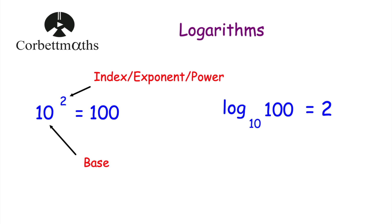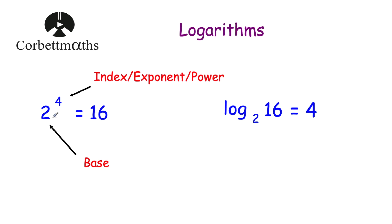Let's have a look at another one. If we had 2 to the power of 4 is equal to 16 — 2 times 2 times 2 times 2 is equal to 16 — then 2 is the base, the power would be 4, and the answer would be 16. If we wanted to introduce logarithms, we could write log to base 2 of 16 is equal to 4. It's saying: what power would you raise 2 by to get to 16? The answer would be 4 because 2 to the power of 4 is equal to 16.